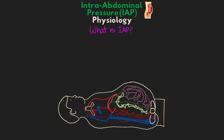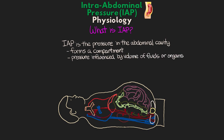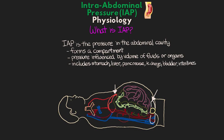Let's start off talking about what intra-abdominal pressure, or IAP, is. Intra-abdominal pressure is the pressure that exists within our patient's abdominal cavity. This cavity forms a compartment in which the pressure inside can be influenced by the volume of fluids or organs within it. The cavity goes from the diaphragm to the pelvis and includes organs such as the stomach, liver, pancreas, kidneys, bladder, and intestines.